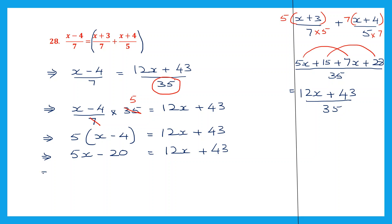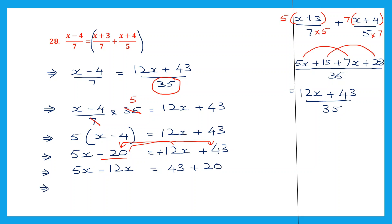So let's get all the x terms to the left hand side and all the whole numbers to the right hand side. We already have 5x here and we are going to bring plus 12x to this side, so it becomes minus 12x. Now we're going to transpose minus 20 to the right hand side, so it's going to become plus 20. On the right hand side now we have 43 plus 20. Signs are different, so we have to put the sign of the bigger number and subtract. 12 minus 5 is 7. So that's 7x is equal to 43 plus 20 is 63. So that means x will be 63 by minus 7.